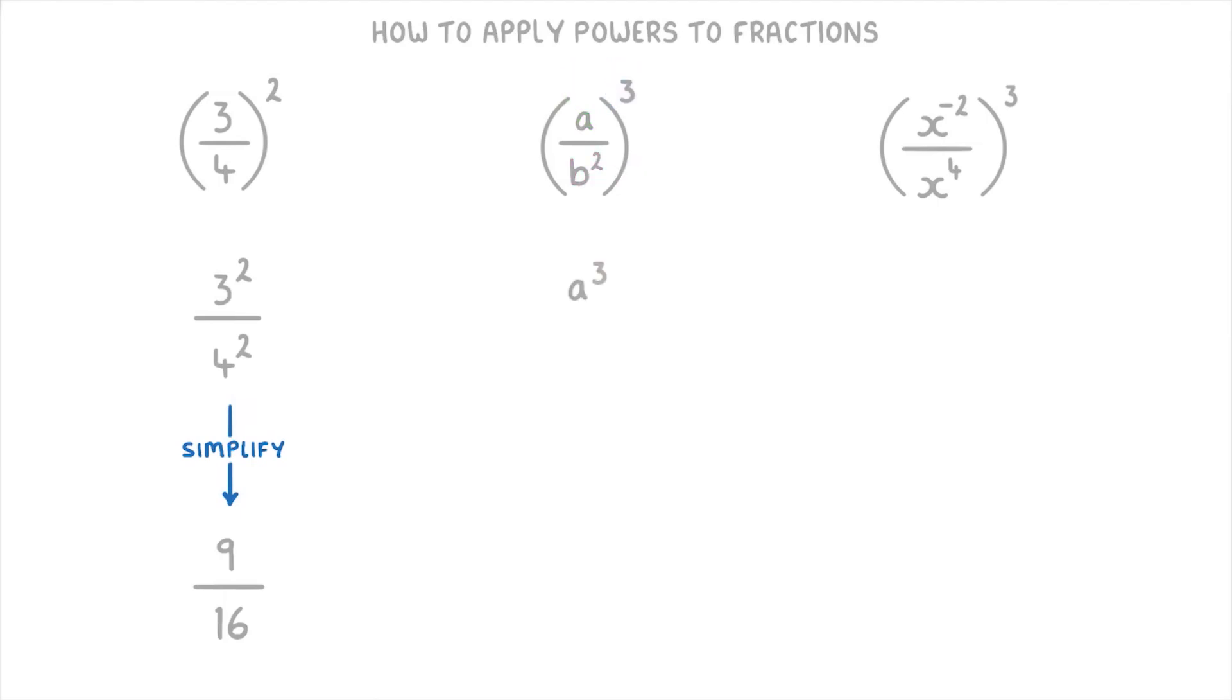So a to the power of 3 on top, and b squared all to the power of 3 on the bottom, which is just a cubed divided by b to the power of 2 times 3.